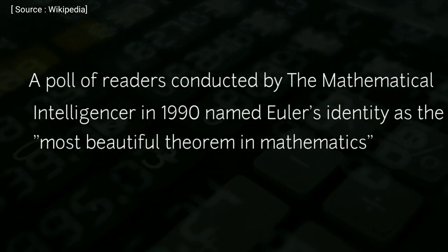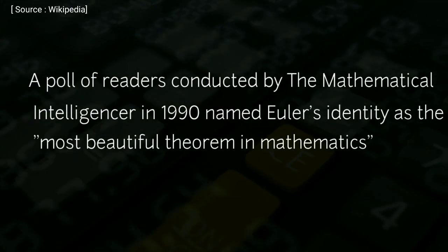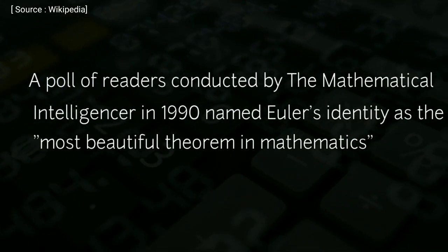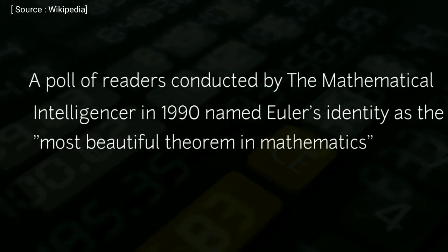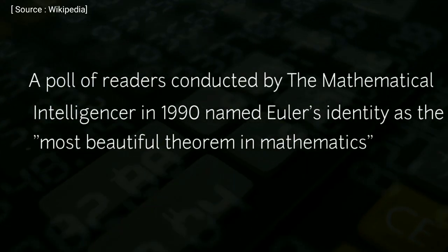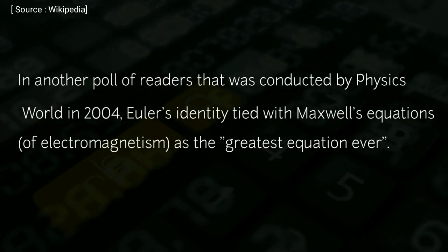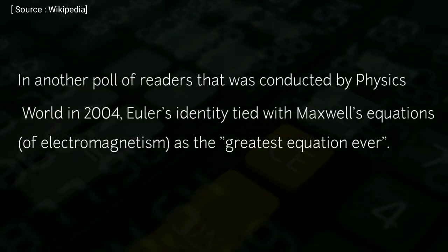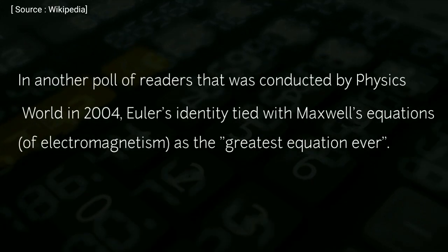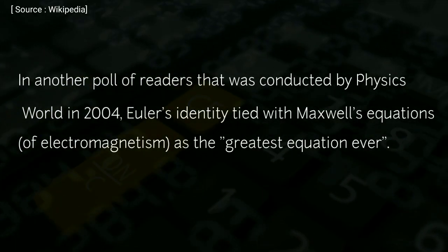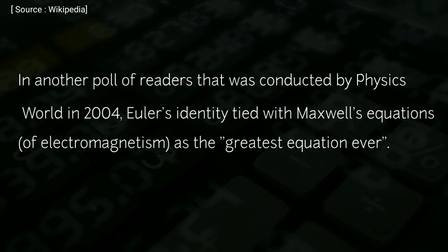A poll of readers conducted by the Mathematical Intelligencer in 1990 named Euler's identity as the most beautiful theorem in mathematics. In another poll of readers conducted by Physics World in 2004, Euler's identity tied with Maxwell's equations of electromagnetism as the greatest equation ever.